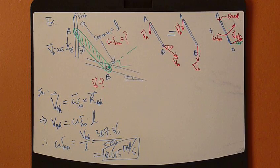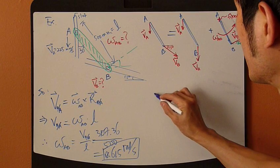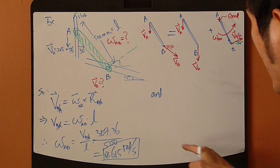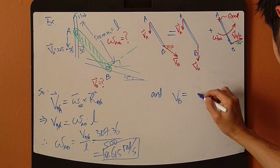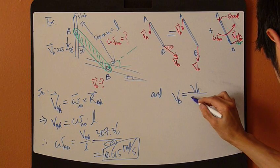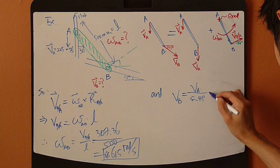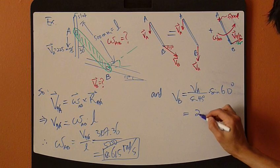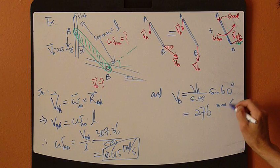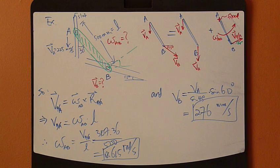And for VB, you just go back to the sine rule. So VB, and plug it in. So it will be VA times sine 50 degrees, equals 276. That's all.